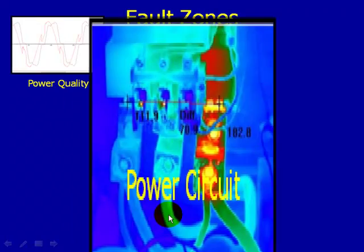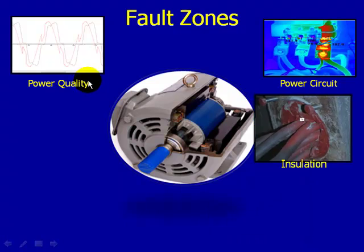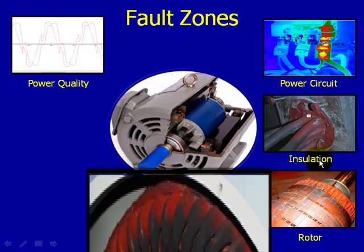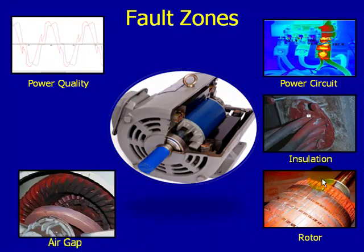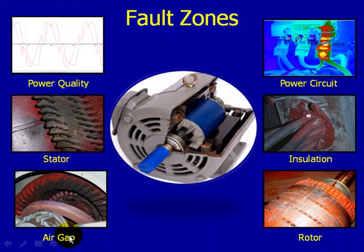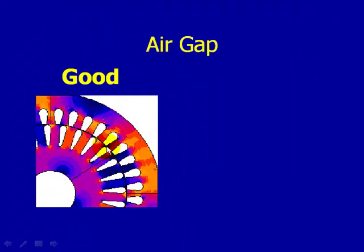PDMA Corporation utilizes a six fault zone approach to analyzing electric motors. They are power quality, power circuit, insulation, rotor, air gap, and stator. Today, specifically, we're going to focus on the air gap fault zone.